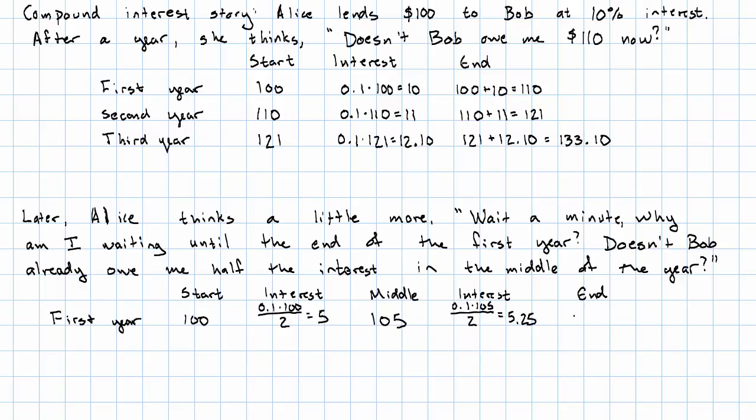And so by the end of the first year, Bob owes Alice $0.25 more than he did when she was just compounding the interest once a year.